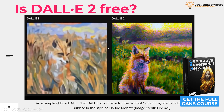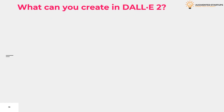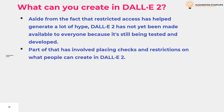This figure shows a comparison of two DALL-E versions: DALL-E 1 and DALL-E 2. Aside from the fact that restricted access has helped generate a lot of hype, DALL-E 2 has not yet been made public to everyone because it's still being tested and developed. Part of that has involved placing checks and restrictions on what people can create, and OpenAI says it's now able to start expanding access thanks to changes in its policies and advances in mitigating bias and toxicity in generated images.